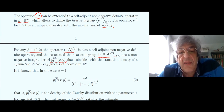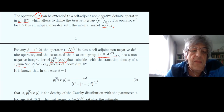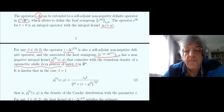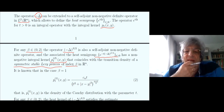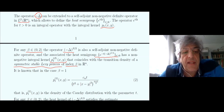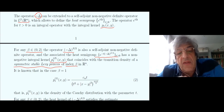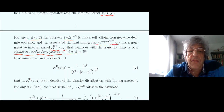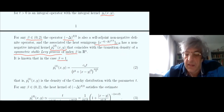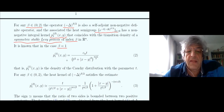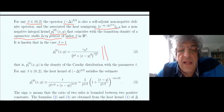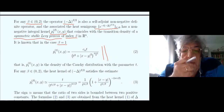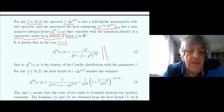This kernel p_t^β coincides with the transition density of the symmetric stable Lévy process in Rn of index β — a jump process in Rn. When β equals 1, there is an explicit formula: this is the Cauchy distribution with parameter t. For arbitrary β between 0 and 2, there is no explicit formula, but there is a good two-sided estimate.